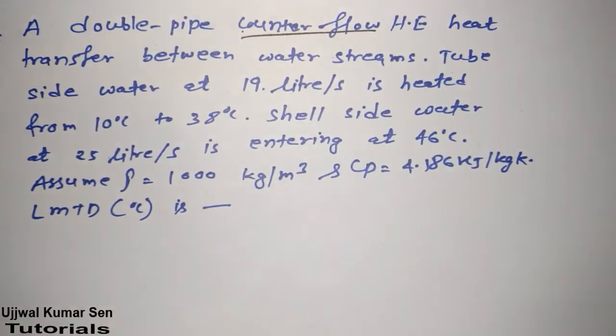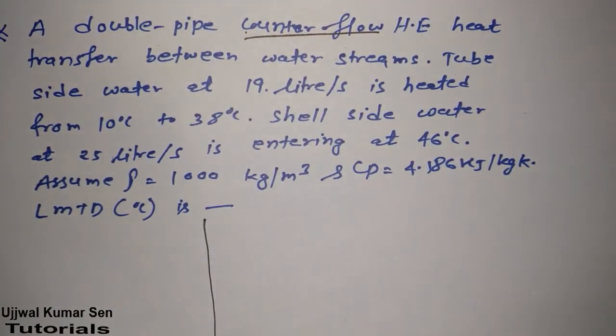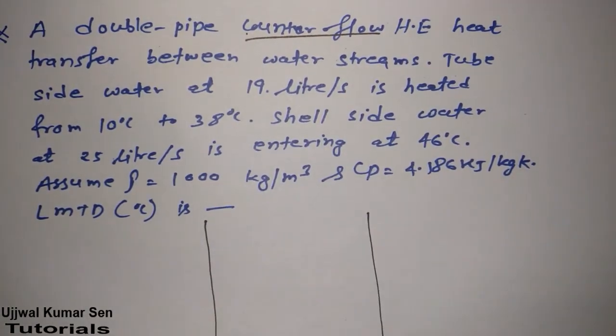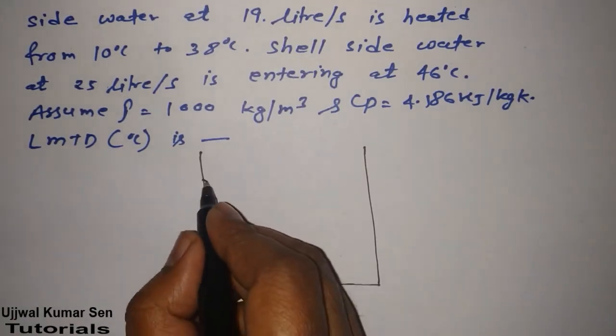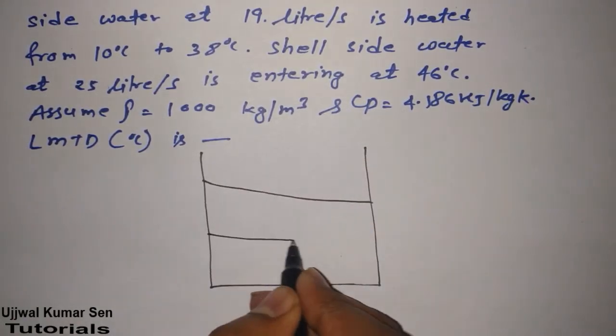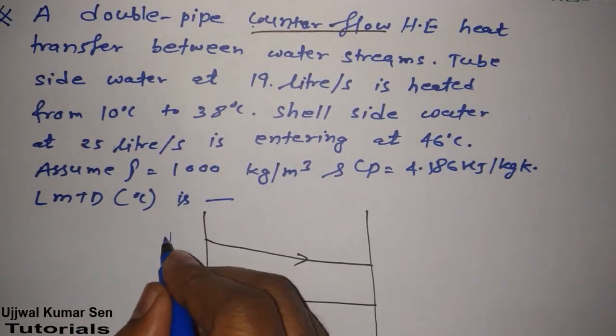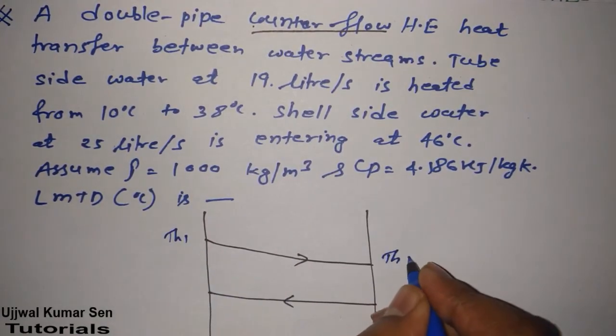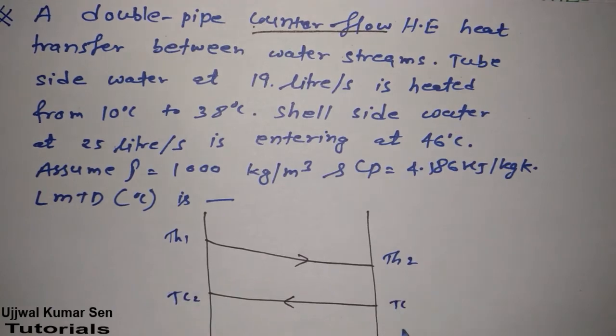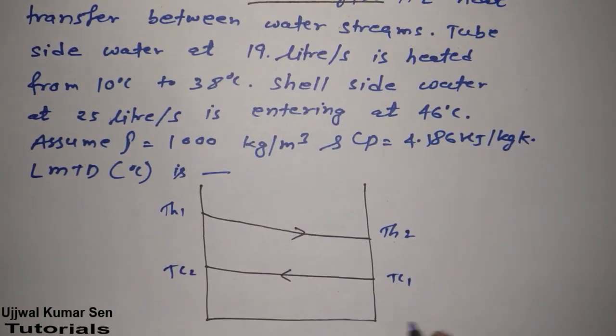So this is a case of counter flow. Draw a diagram of counter flow heat exchanger. So this is TH1, this is TH2, this is TC2, this is TC1 because of counter flow heat exchanger.